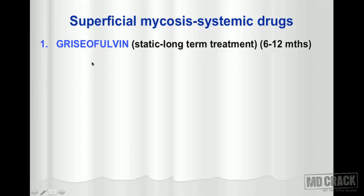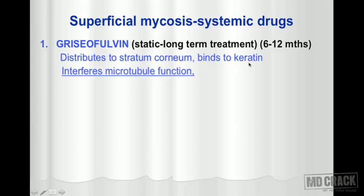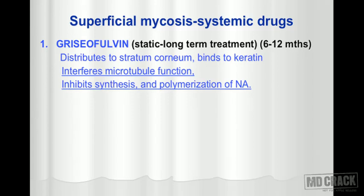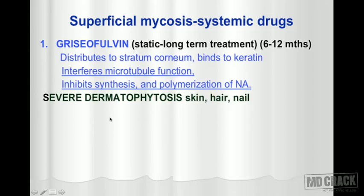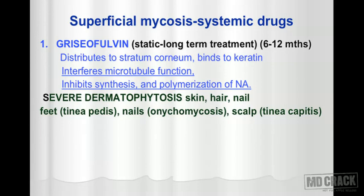Griseofulvin gets distributed to the stratum corneum, binds to keratin, and after binding to keratin it interferes with microtubule function, ultimately inhibiting the synthesis and polymerization of nucleic acids. It is used for severe dermatophytosis of the skin, hair, and nails. Examples include tinea pedis (feet), onychomycosis (nails), and tinea capitis (scalp).